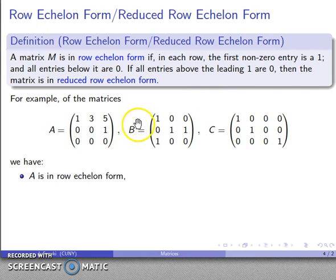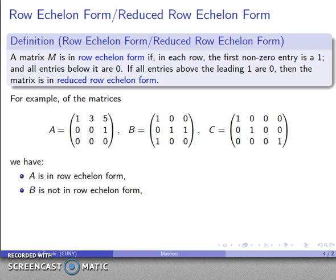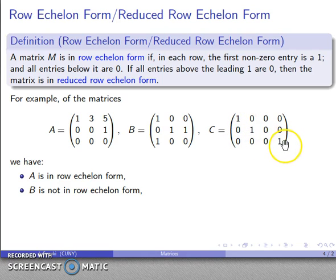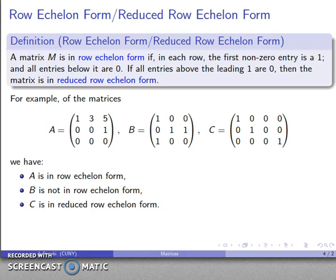For matrix B, the first non-zero entry of the first row is a one, but below it there is a non-zero entry, so B is not in any sort of row echelon form. For matrix C, the first non-zero entry is a one with zeros both below and above it, and likewise for the next row. So C is actually in reduced row echelon form, where all entries above the leading ones are also zero.